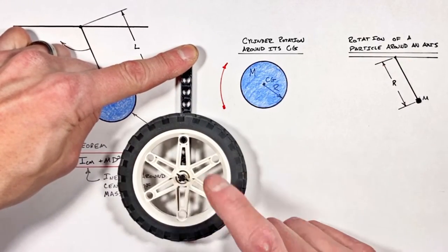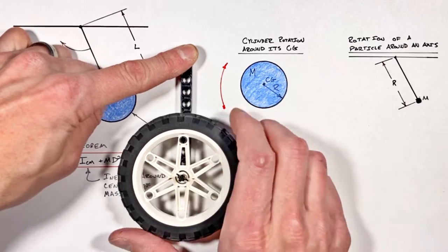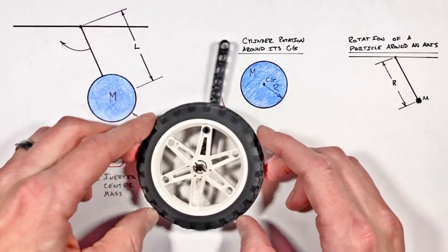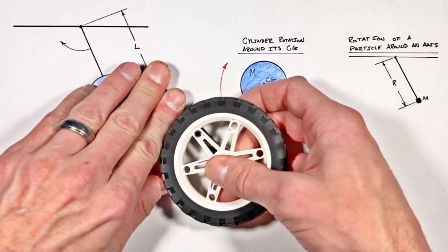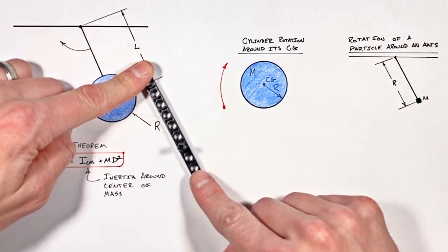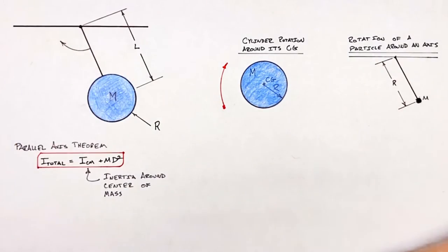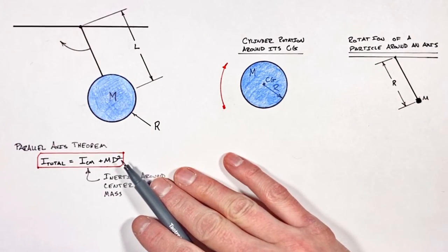Additionally, the cylinder is rotating around this point up here, this pivot point which I'm anchoring this entire assembly by. And so really what we have are two different rotations happening at once: